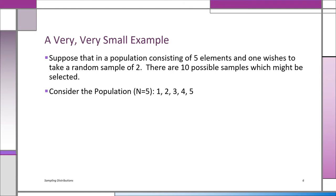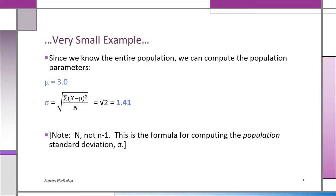This will still illustrate what we're trying to get across. The 10 possible samples you can take — that's 5 combination 2. Since we know the whole population, which is just 1, 2, 3, 4, 5, we can compute the population parameters. Mu is 3 — the average of 1+2+3+4+5 divided by 5. The population standard deviation is 1.41.